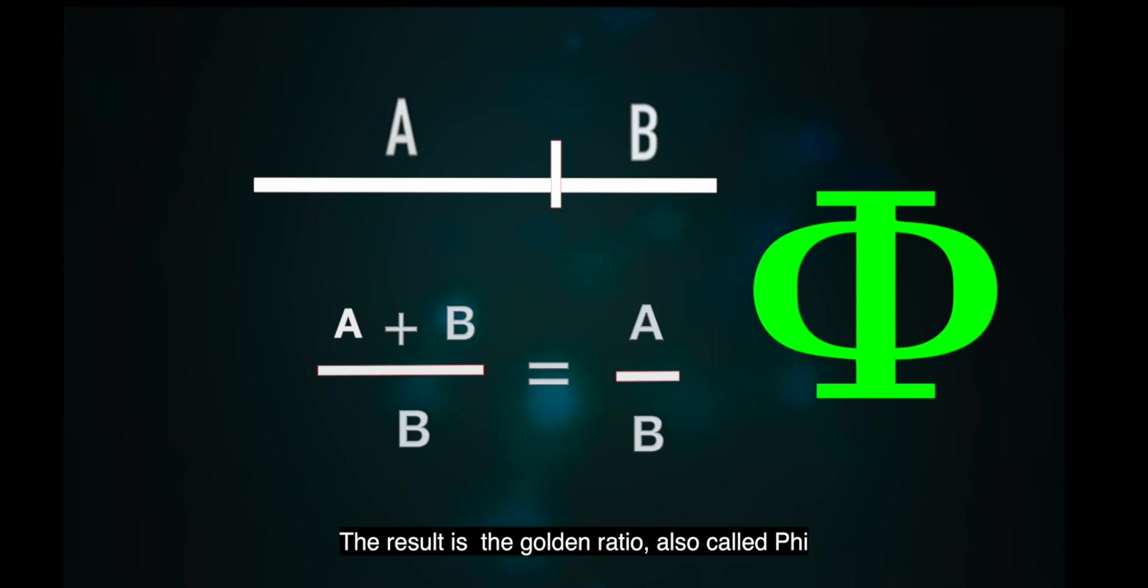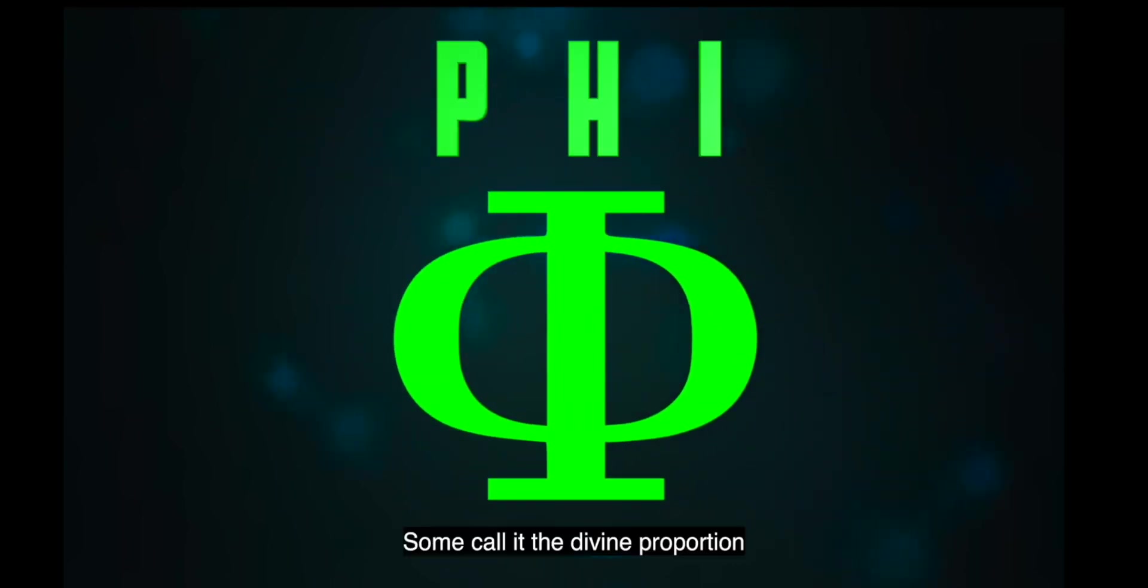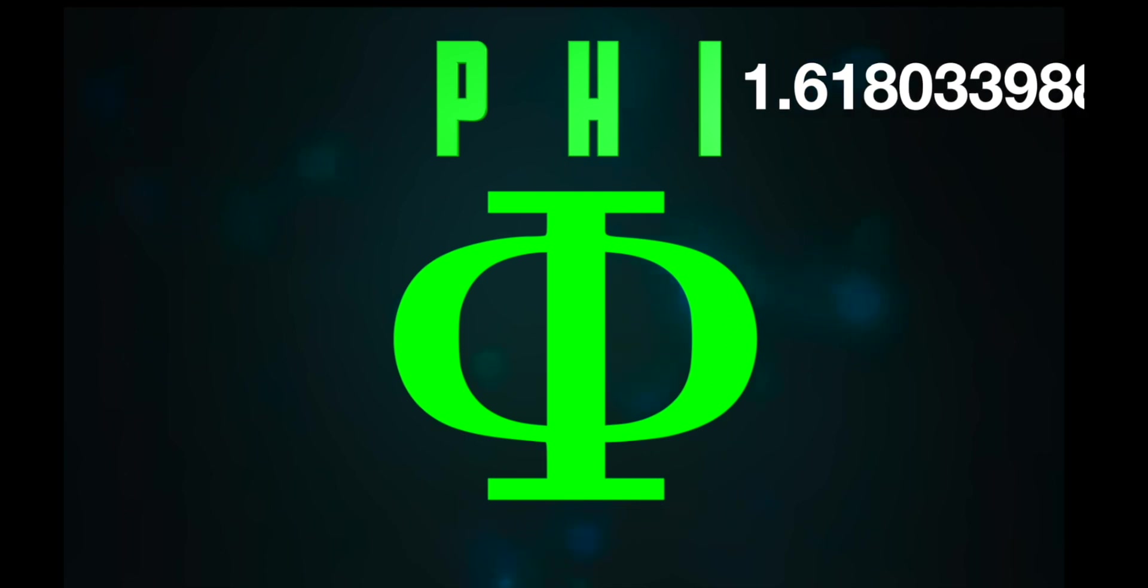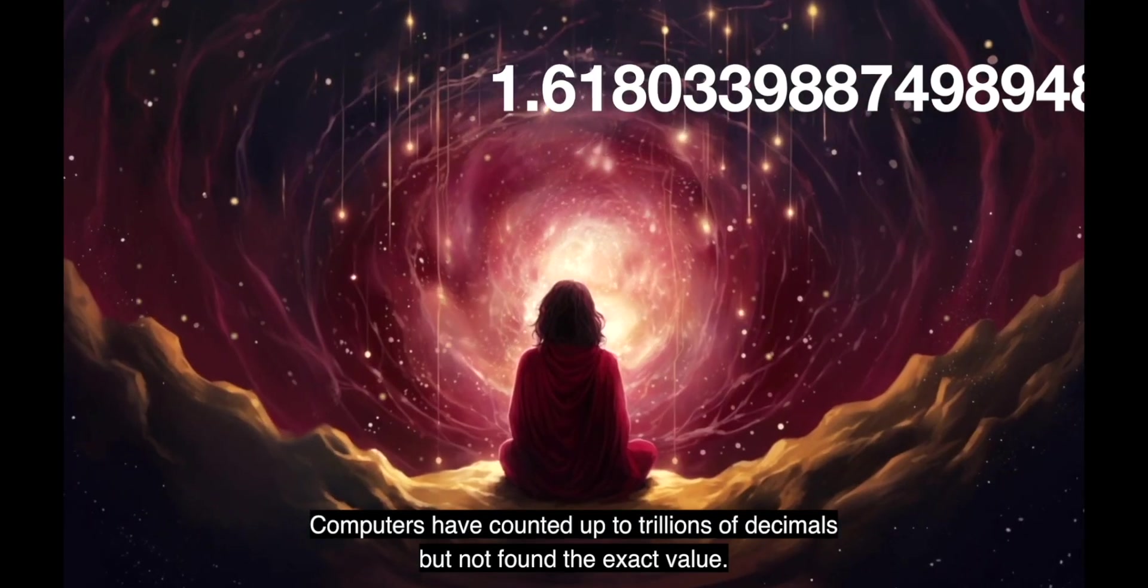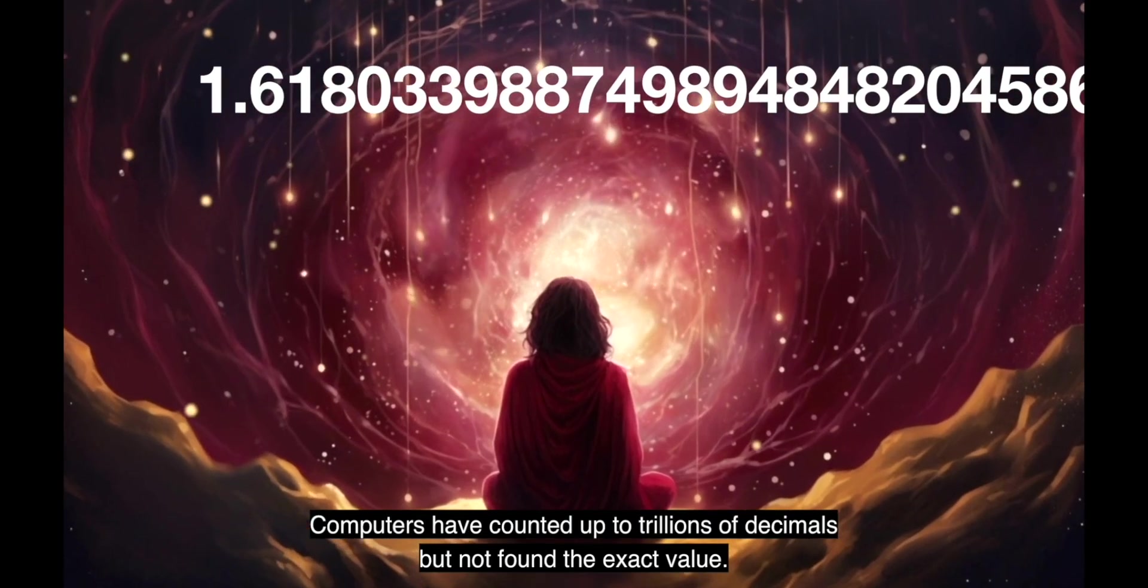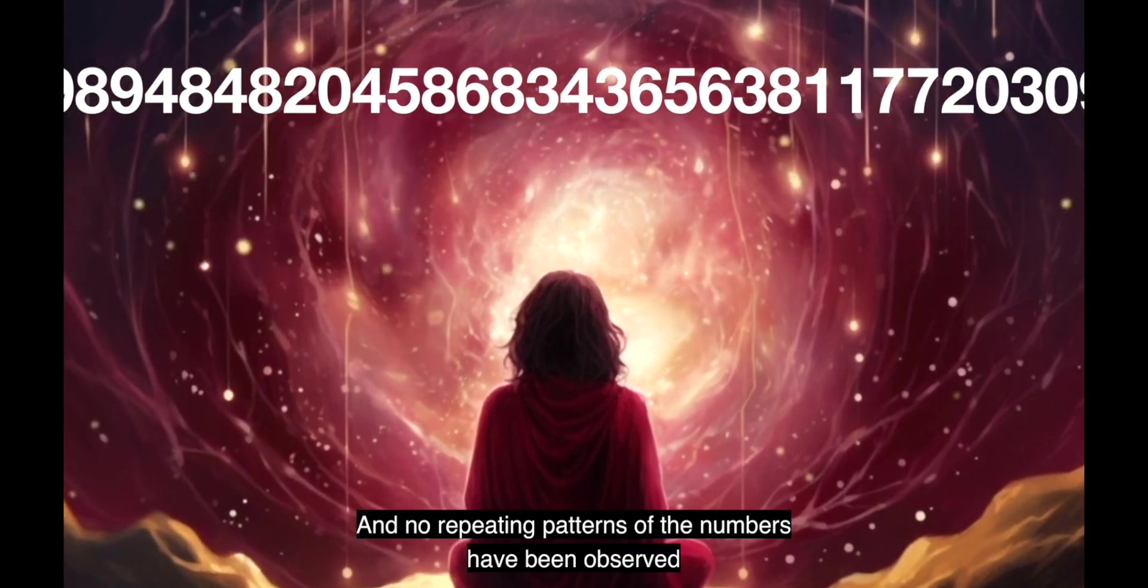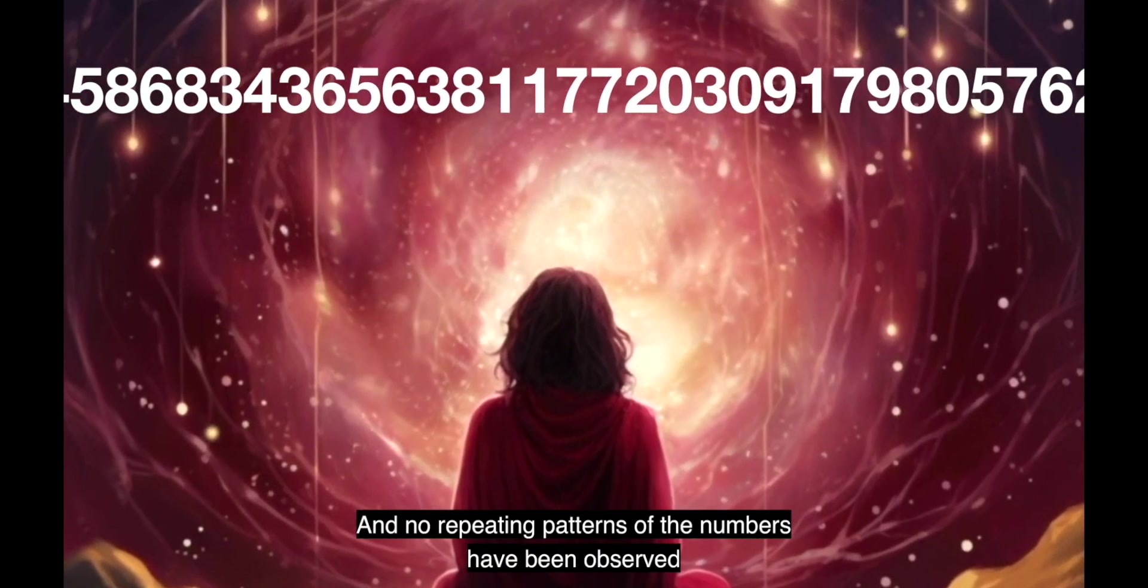Also called phi, some call it the divine proportion. The ratio is about 1.62, but the exact value is impossible to find because it is indivisible. Computers have counted up to trillions of decimals but not found the exact value, and no repeating patterns of the numbers have been observed.